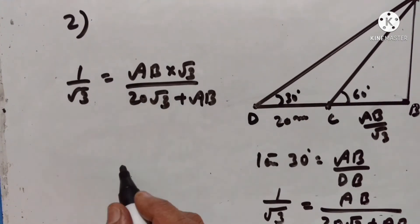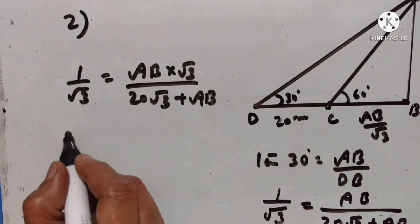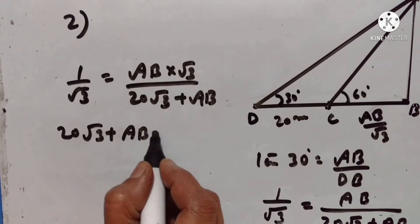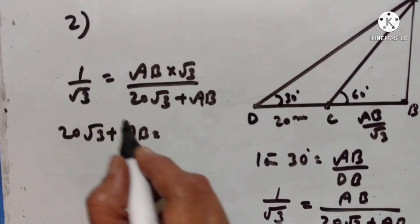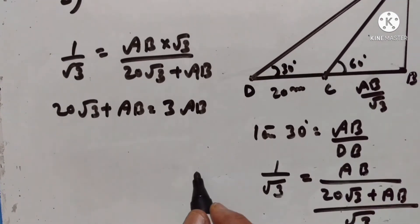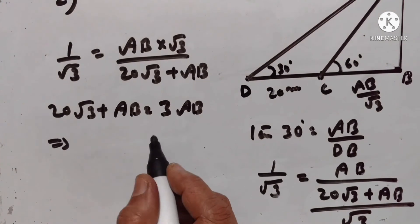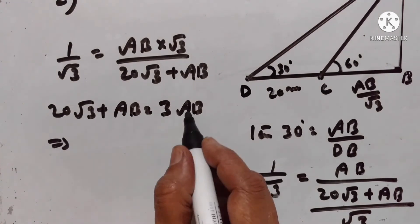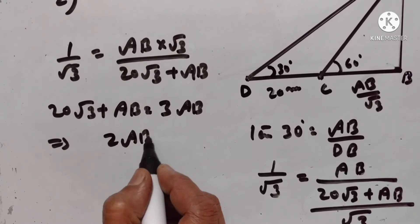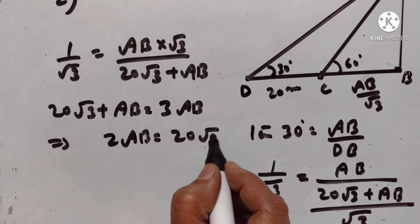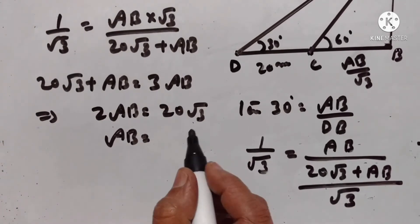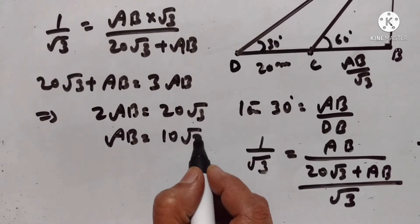When we cross-multiply, we get 20 square root of 3 plus AB is equal to square root of 3 times square root of 3, which is 3, times AB — that is 3AB. So 3AB minus AB is equal to 2AB. Therefore 2AB is equal to 20 square root of 3, giving AB is equal to 10 square root of 3.